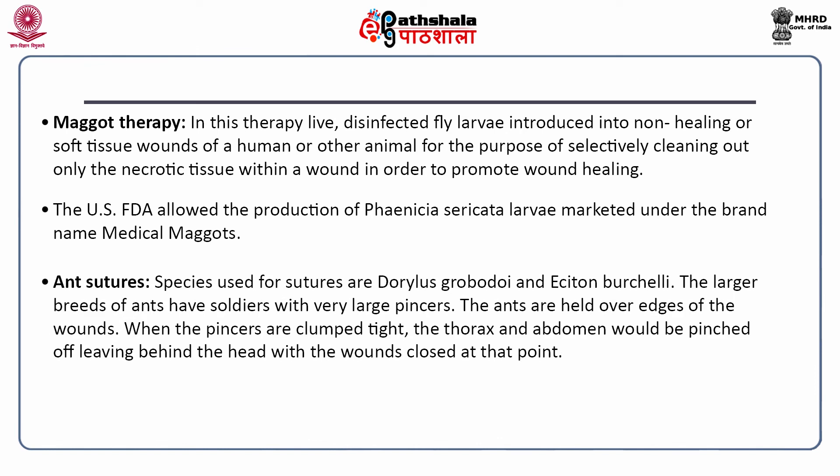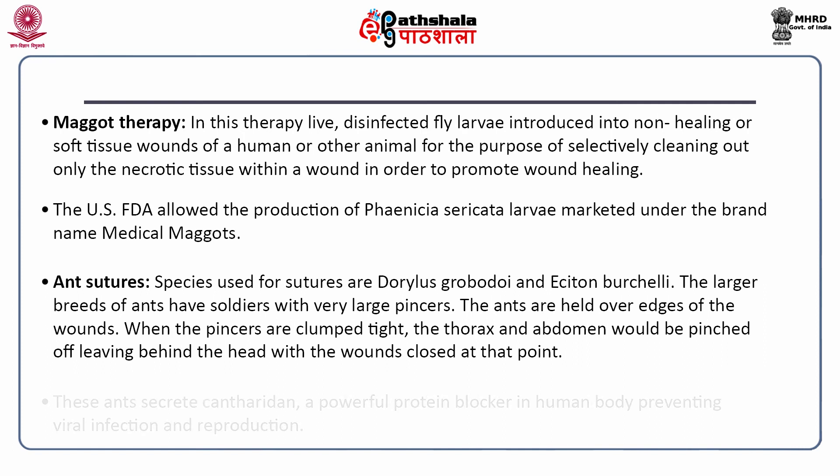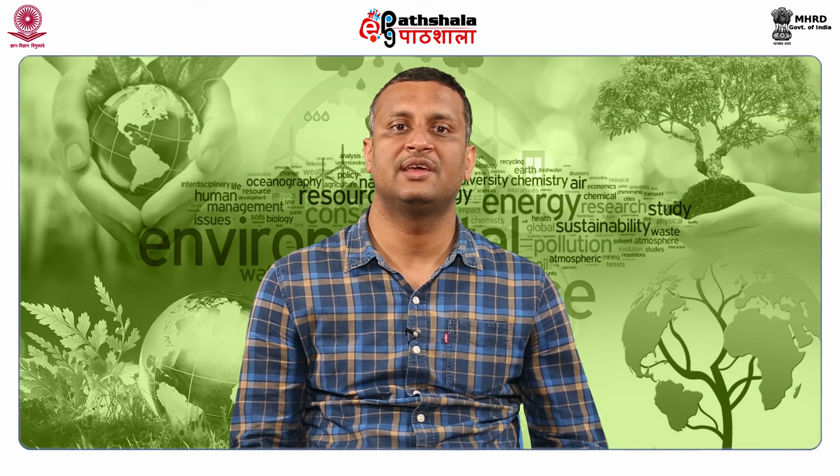Ant sutures is another practice where species used include Dorylus and Eciton burchellii. The larger breeds of ants have soldiers with very large pincers. The ants are held over the edges of wounds; when the pincers clamp tight, the thorax and abdomen are pinched off, leaving behind the head with the wound closed. These ants secrete a substance known as canthardin, a powerful protein blocker in the human body preventing viral infection and reproduction.